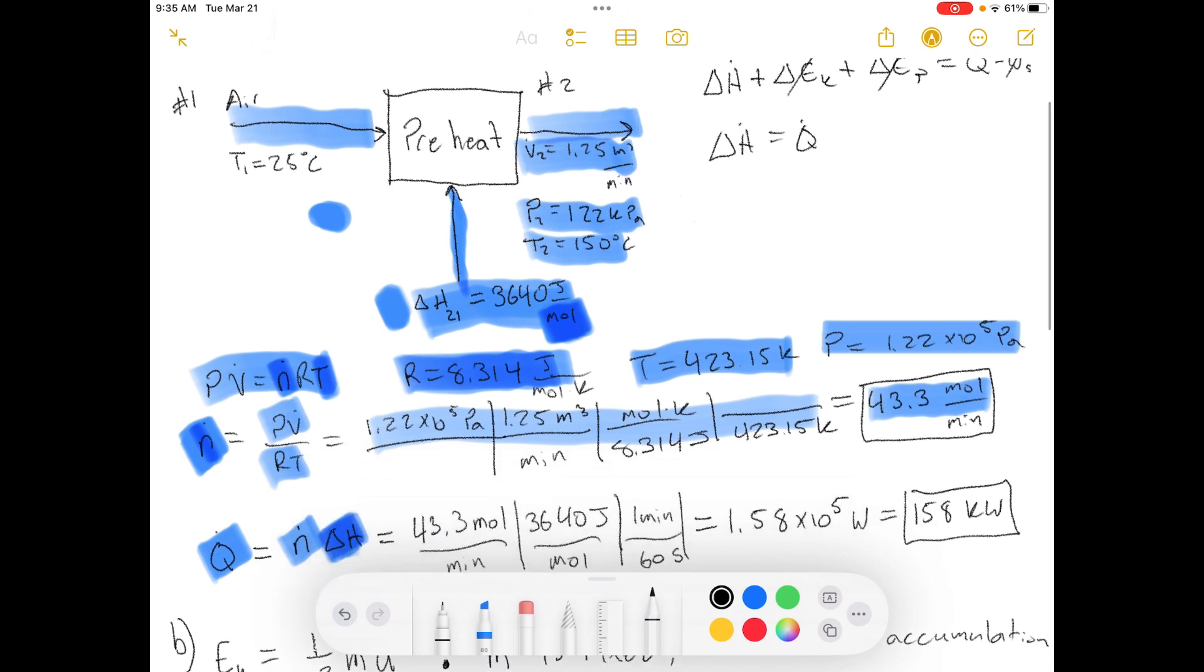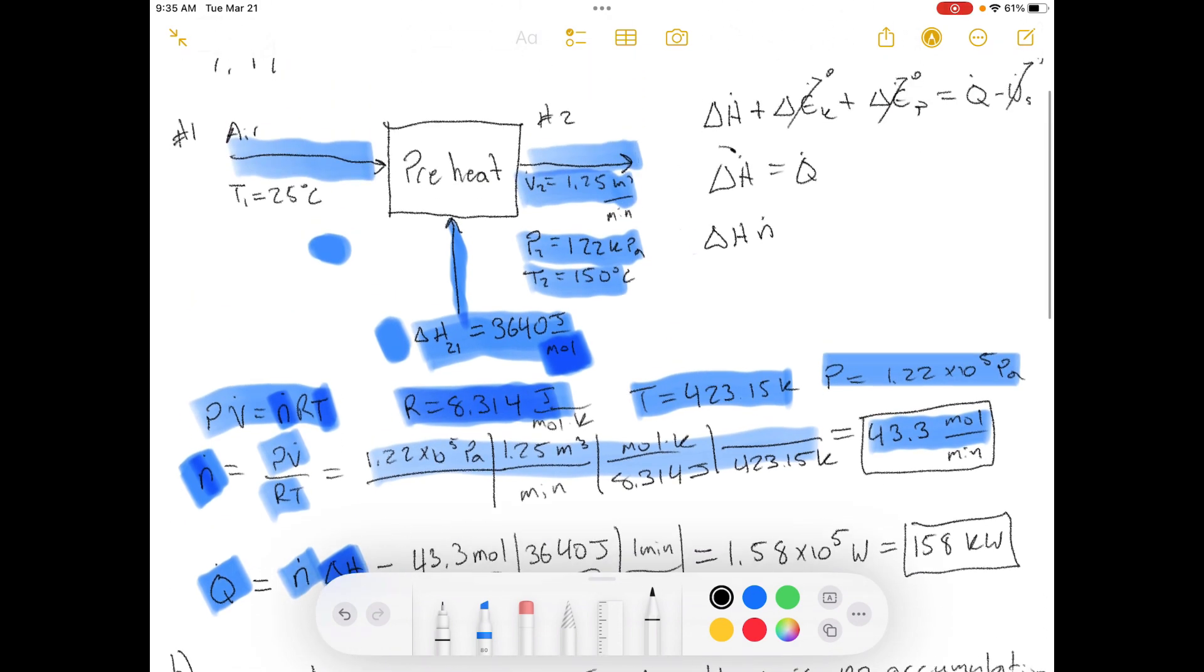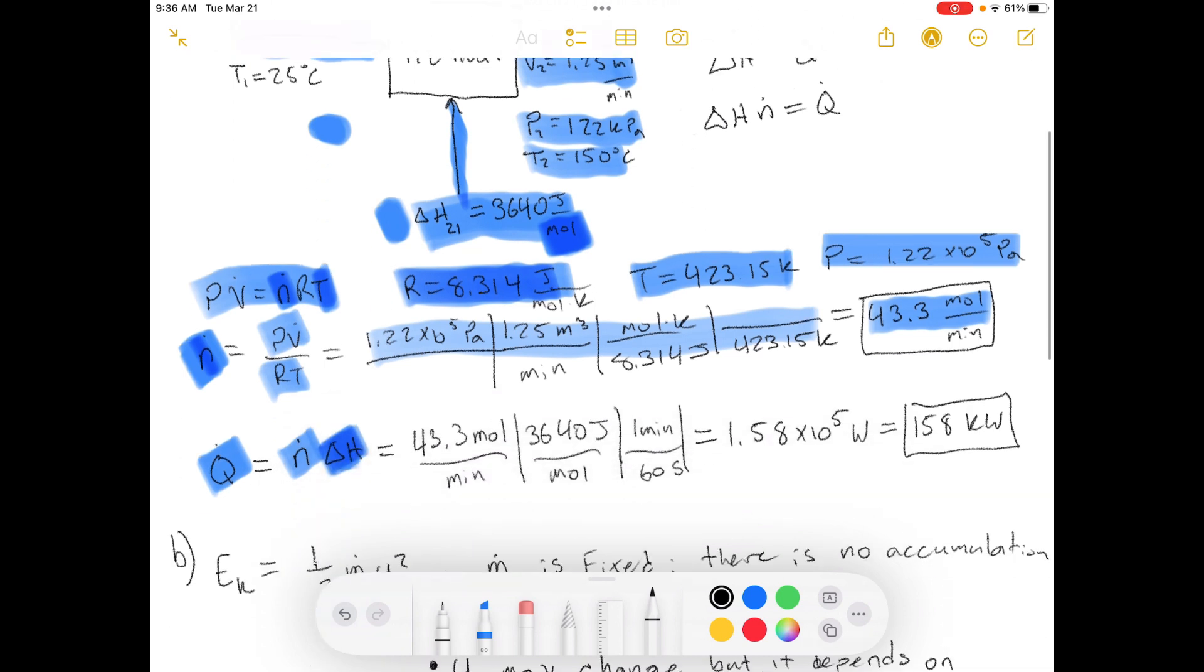And in order to figure out what delta H is, we can break this up. They gave us a delta H, but it was a specific enthalpy. And so in order to change the specific enthalpy into an enthalpy that's a flow, the flow rate of enthalpy, that's what the little dot symbolizes, then we need to multiply it by the molar flow rate. So then you get Q equals delta H times N. So that's where this equation came from.